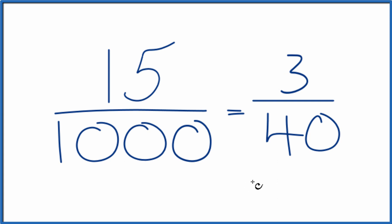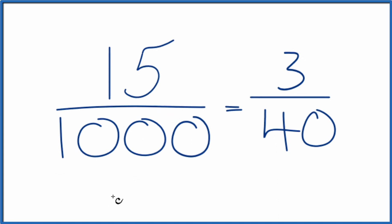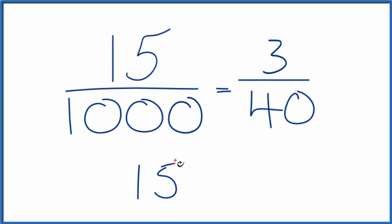If you wanted to have a decimal for 1.5%, you could just divide 3 by 40 or 15 by 1,000. Probably easiest to divide 15 by 1,000. So let's write 15 here. And then when we divide by 1,000, we'll move the decimal point here three places.